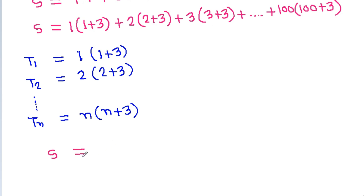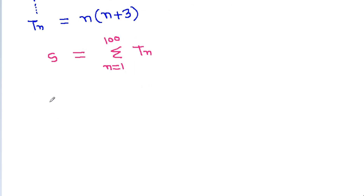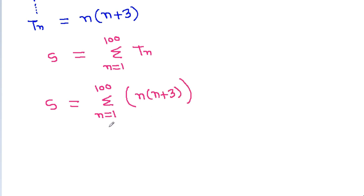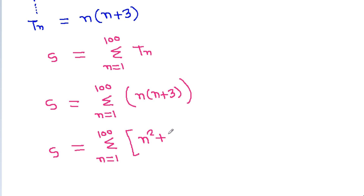So, S will be equal to the summation from n equals 1 to 100 of tn. And S is equal to summation from n equals 1 to 100 of n times (n plus 3), which expands to n squared plus 3n.